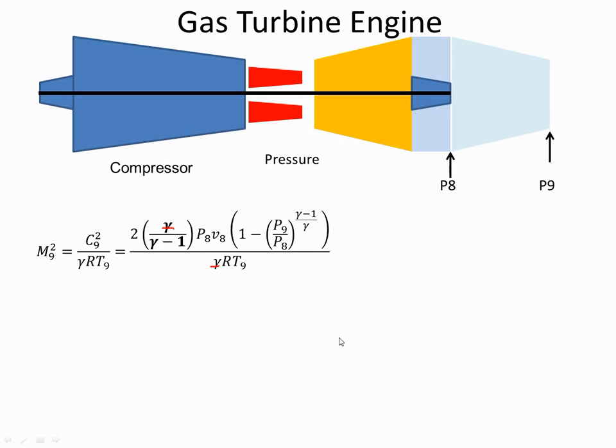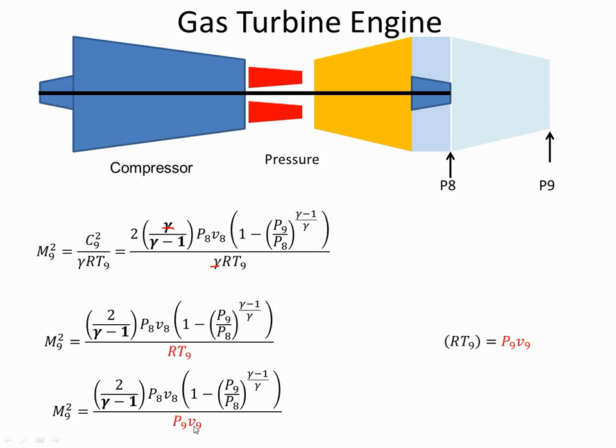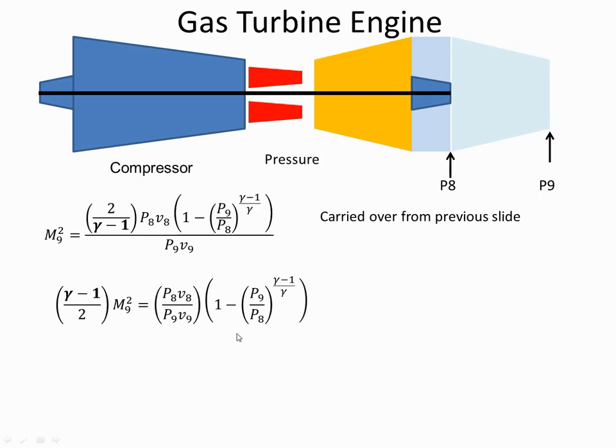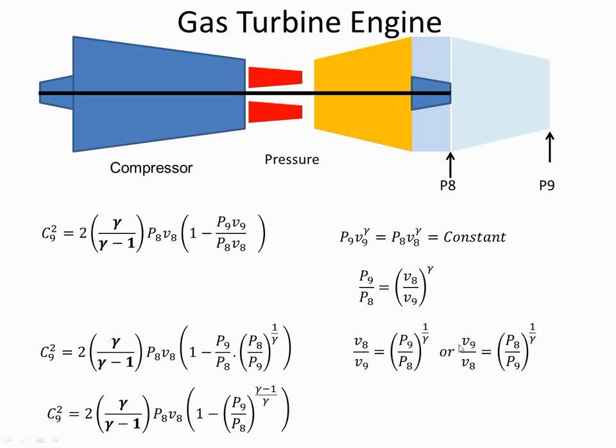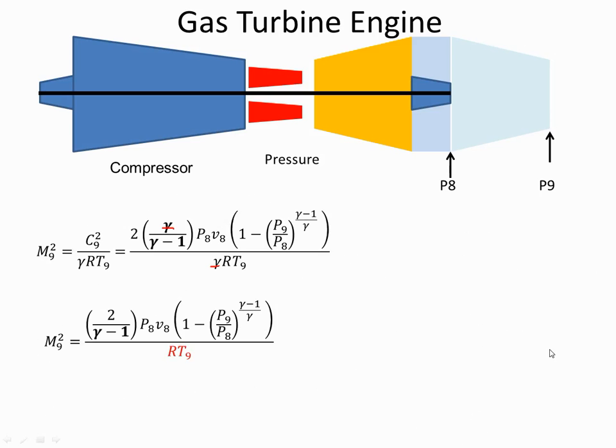Immediately the gammas cancel out. And I'm left at RT9 here. Now if I go back to the ideal gas laws, I know that RT is equal to P by V. So I can substitute that back in. So now I have P8V8 over P9V9. Which is here. P8V8 over P9V9. Well we saw just a few seconds ago, or a minute or two ago, that V8 over V9 is equal to P9 over P8 to the power of 1 over gamma. Saw that back here.